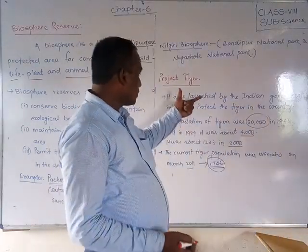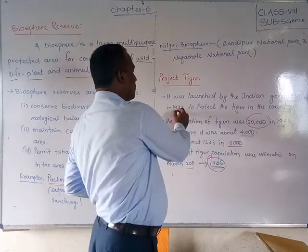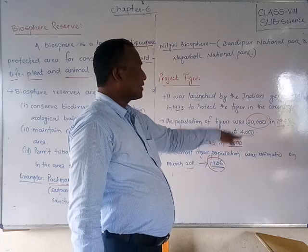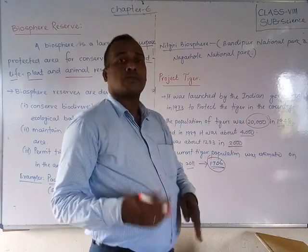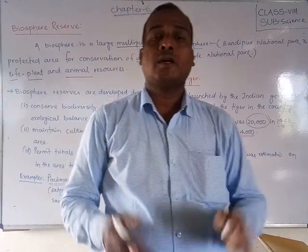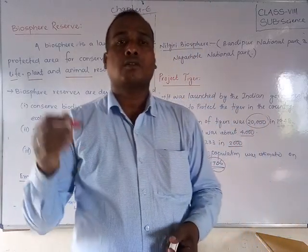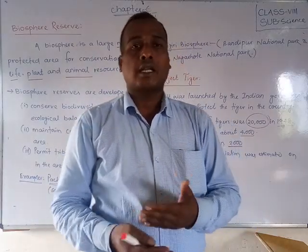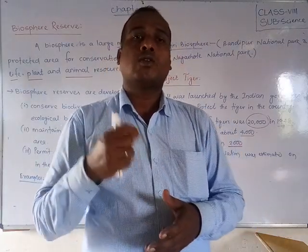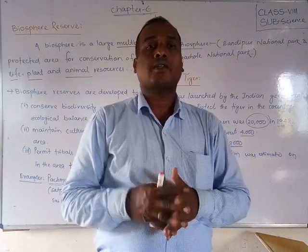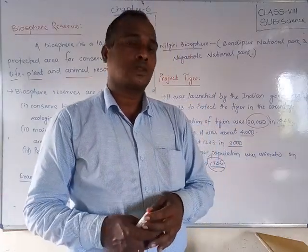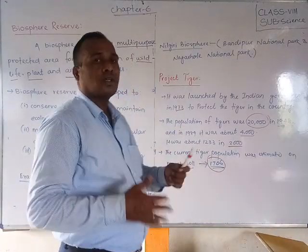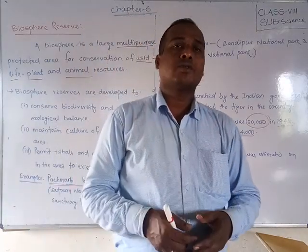Due to this continuous decrease, the government of India in 1973 decided to act. They made an act to protect tigers — nobody can kill a tiger, and if they do, the government will take action against that person. By this way, tigers are being conserved and protected.